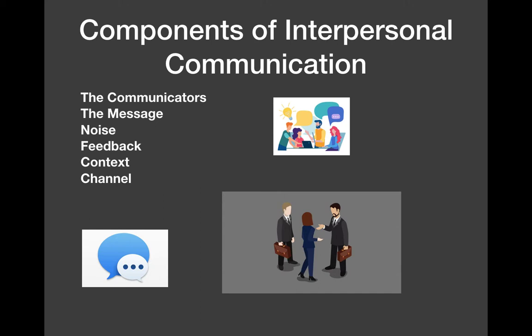There are six main components of interpersonal communication skills. The first one is the communicator — this refers to both the sender and the receiver. There are at least two communicators involved at all times, generally in the workplace. The second one is the message, one of the most important parts. It can be conveyed through speech, body language, tone of voice, gestures, and other indicators.